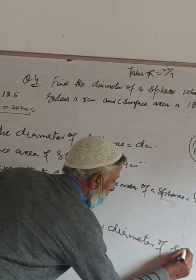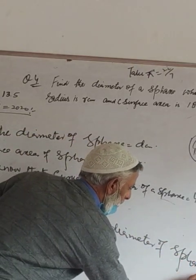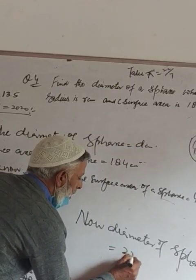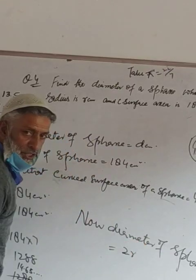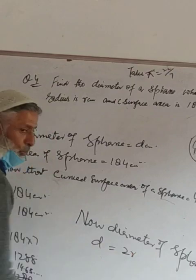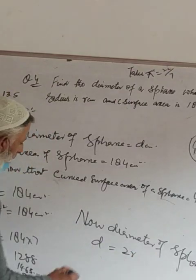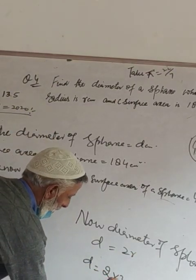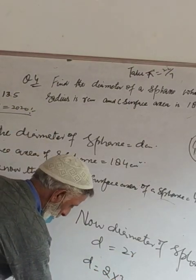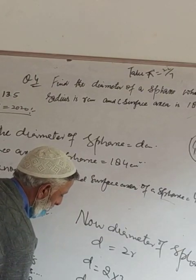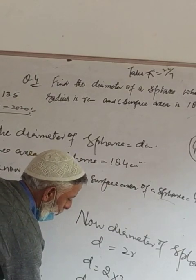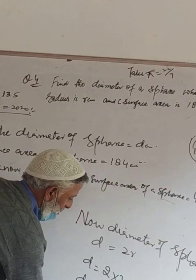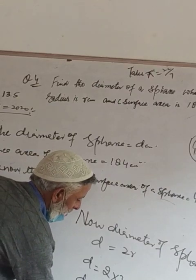Now, diameter of the sphere is equal to twice R. D is equal to 2R. D is equal to 2 into 3.09. 2 nines are 18, 2 nines are 6, so D is equal to 6.18 centimeters.